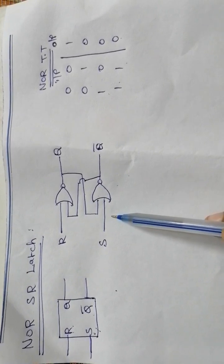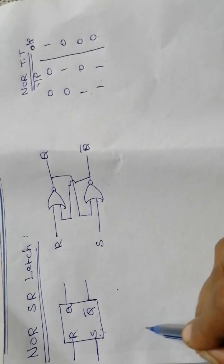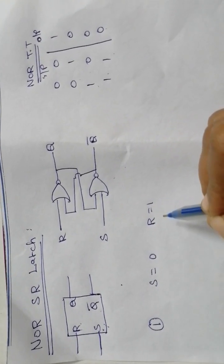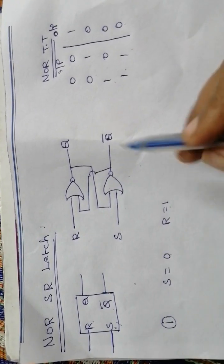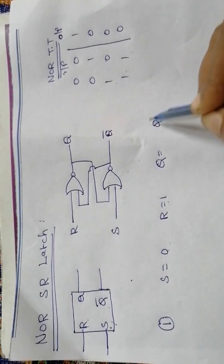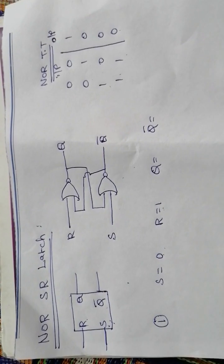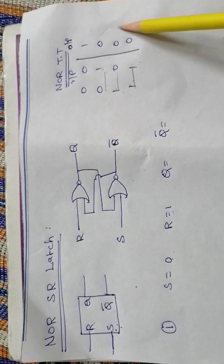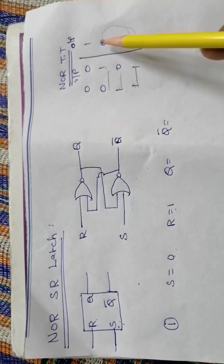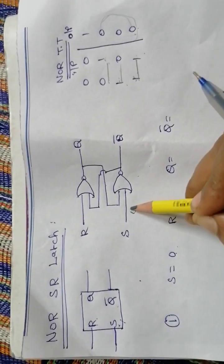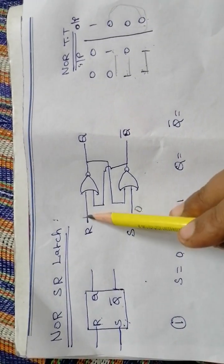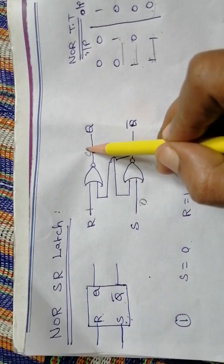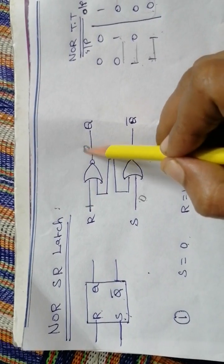The operation of the SR latch can be considered in three cases. Case 1: if input S is equal to 0 and R equal to 1, we can see what is the output of Q and Q bar — that is, the next state. According to the NOR truth table, if any one of the inputs is 1, the output will be 0. So with S=0 and R=1, because one input is 1, the NOR gate output — that is Q — equals 0.